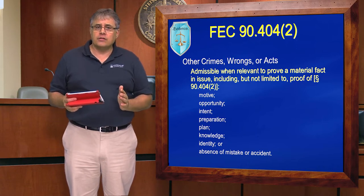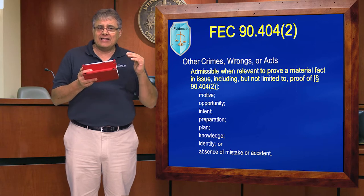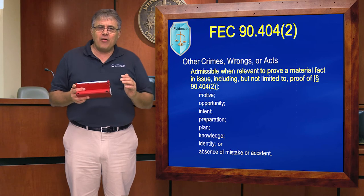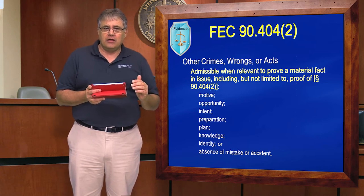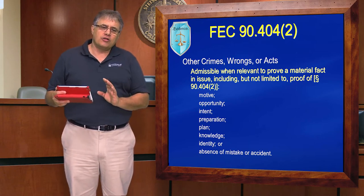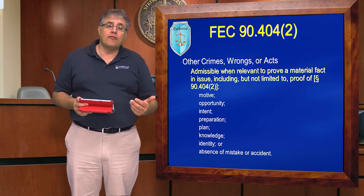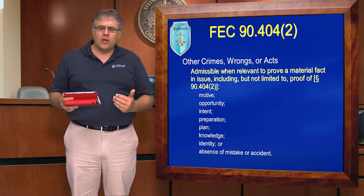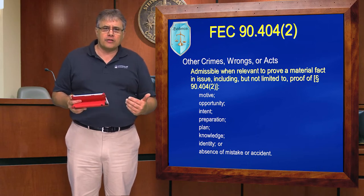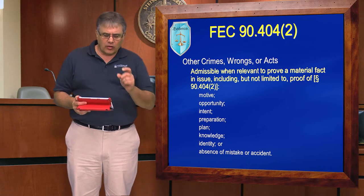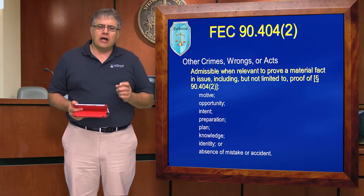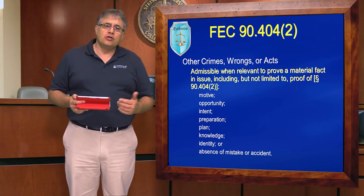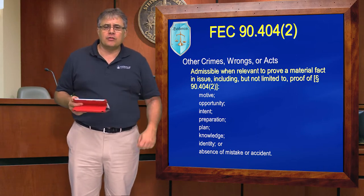It's important that the exception used under 4042 in Florida very closely mirror or identify the charged offense sufficiently to overcome a 403 objection. The Florida courts are very sensitive to the potential for unfair prejudice in letting this bad character evidence in. It's really got to hit the exception in a way that makes it clear that it is, in fact, good evidence of motive, plan, opportunity, or whichever one it happens to be.